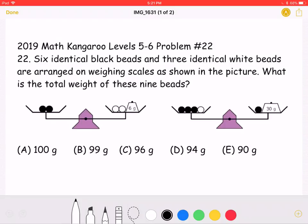A. 100 grams, B. 99 grams, C. 96 grams, D. 94 grams, or E. 90 grams. This is the problem as it originally appeared on the test.